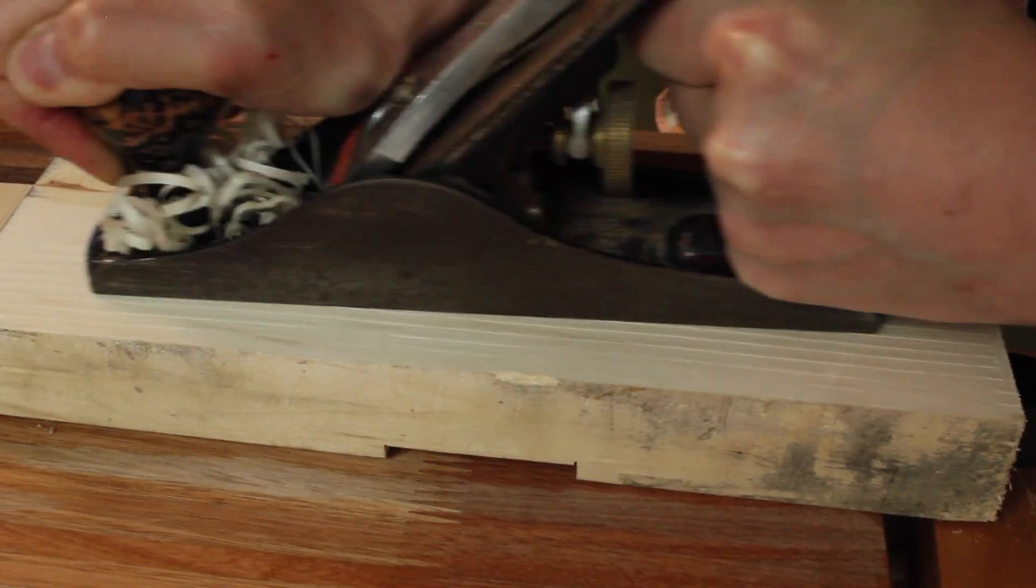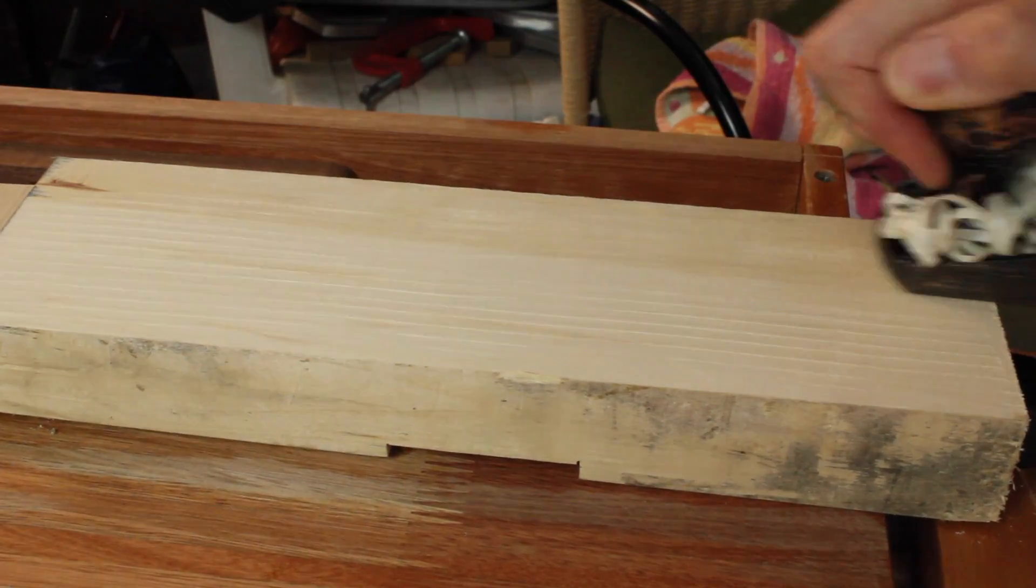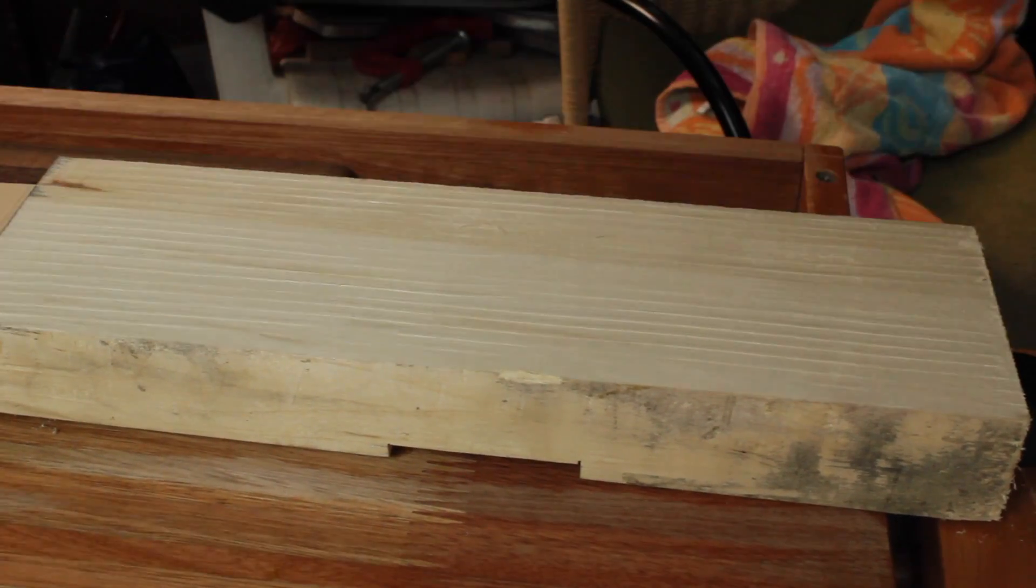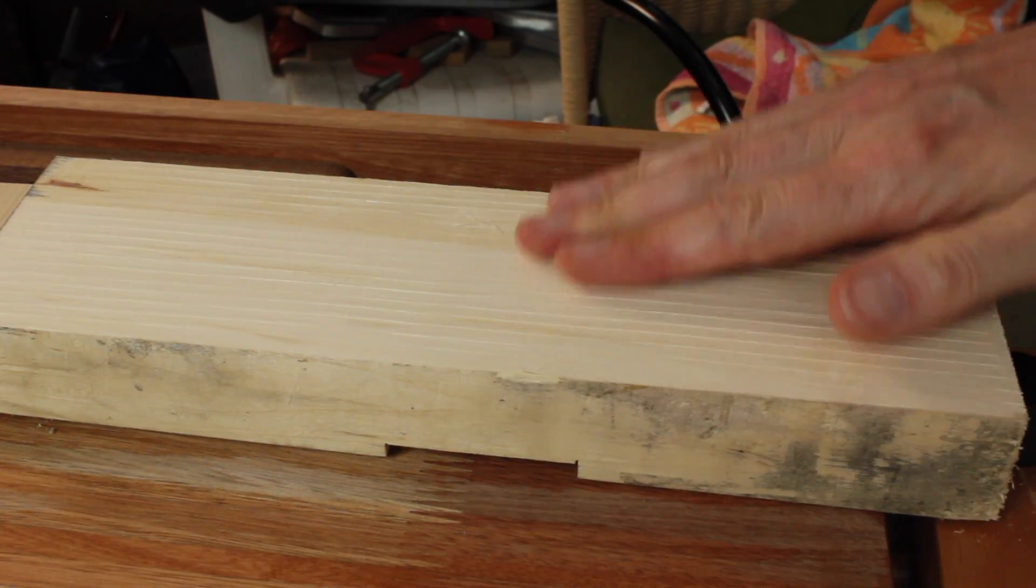And now you can see where you've planed. Once you're happy you've covered the entire surface, you just go back over again with a smooth blade. Of course in practice this means you either need two blades or preferably two planes.